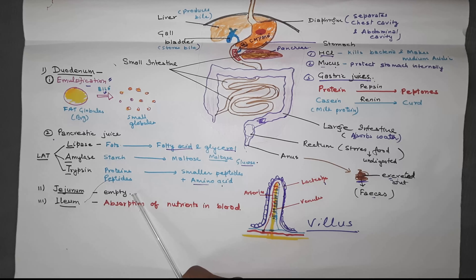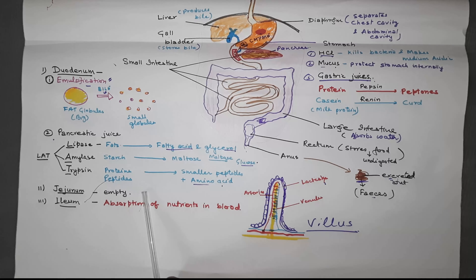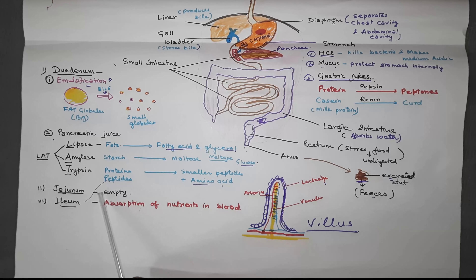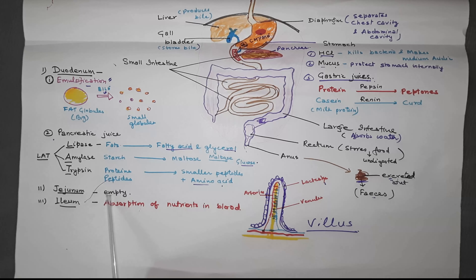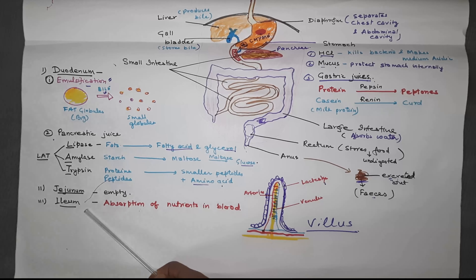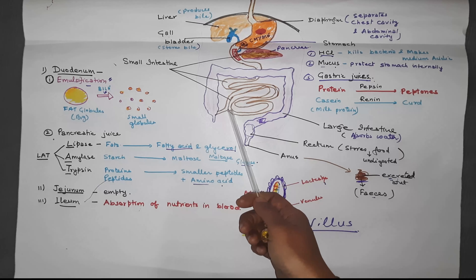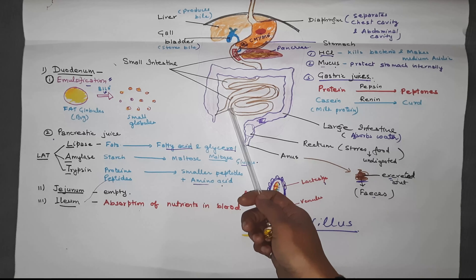After digestion in the duodenum, the middle portion of the small intestine is the jejunum. It remains empty most of the time — it has been observed that when a postmortem is done after death, it becomes empty immediately — which is why it is called the jejunum.